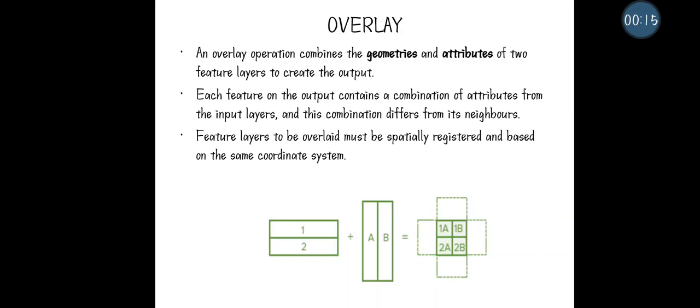Overlay works with polygons. Two or more feature types will be combined together to form an output. When combining two or more feature classes, both polygons should be in the same coordinate system. If both feature classes are not in the same coordinate system, they cannot be used for the overlay process.